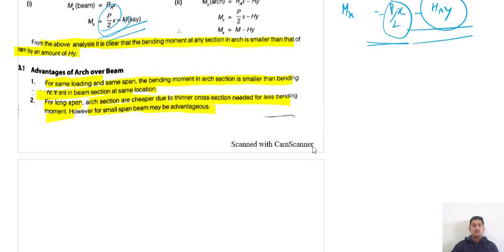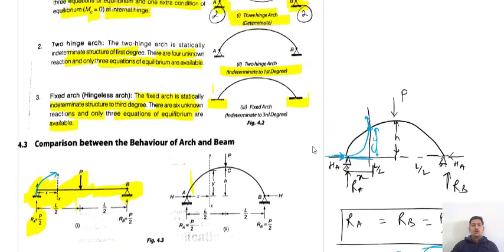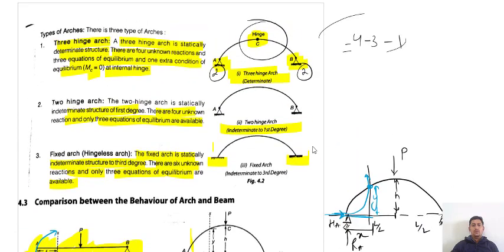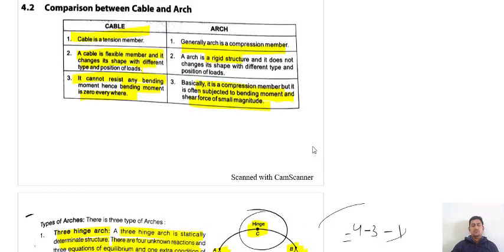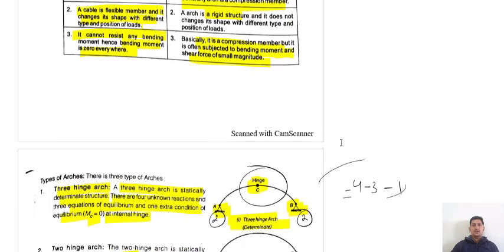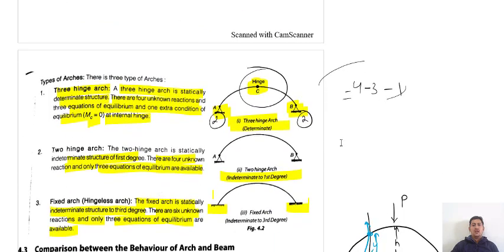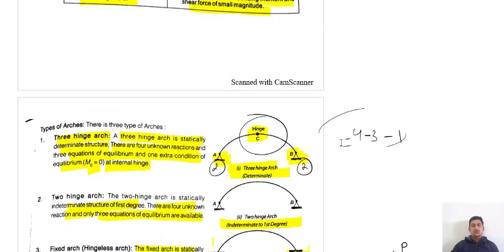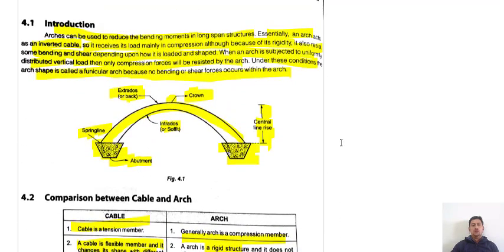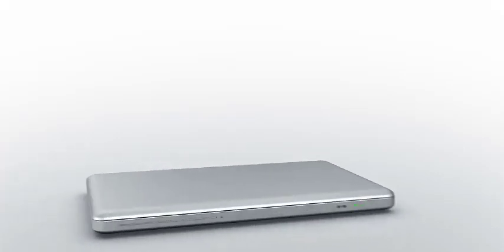I hope you are clear with the concept behind arches — the comparison between cables and arches, the types of arches, by how much the moment is reduced in an arch, and why we prefer arches in the case of long spans, which is to reduce the bending moment in the structure. Thank you very much.